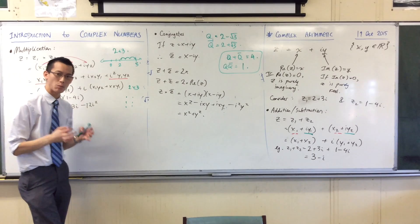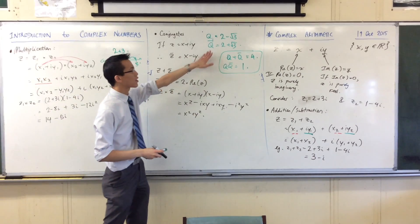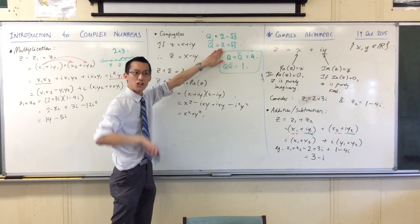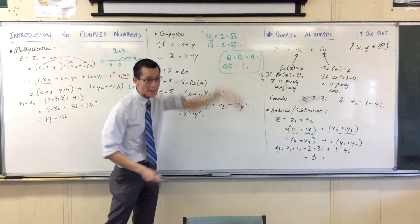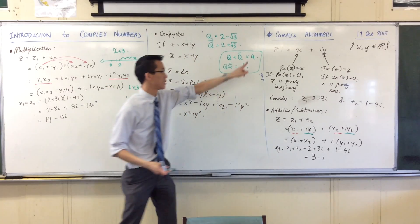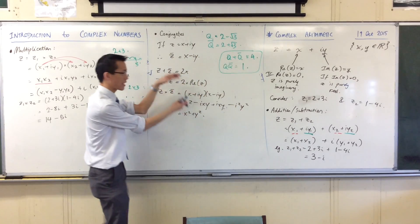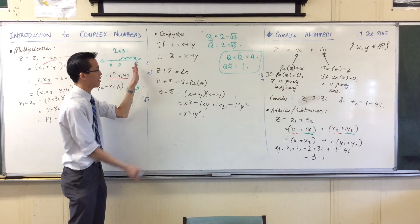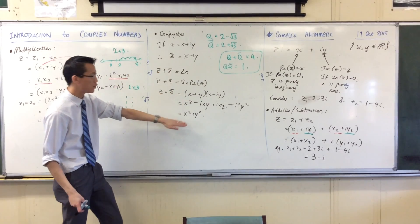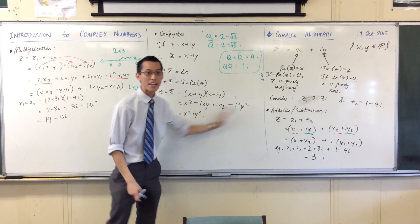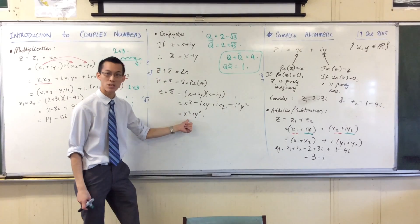So in just the same way that in the context of irrational numbers, you can use conjugates to get rid of irrational numbers. See, these are just rational. In the context of complex numbers, I can use conjugates to get rid of the imaginary part. And all I get left with is real.